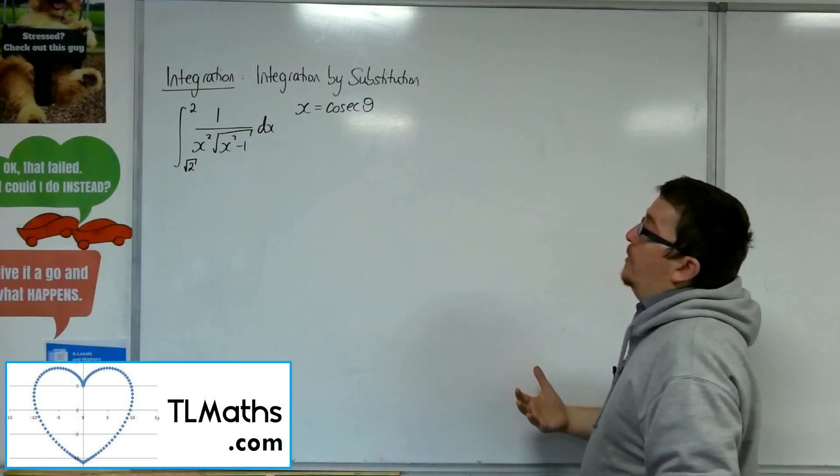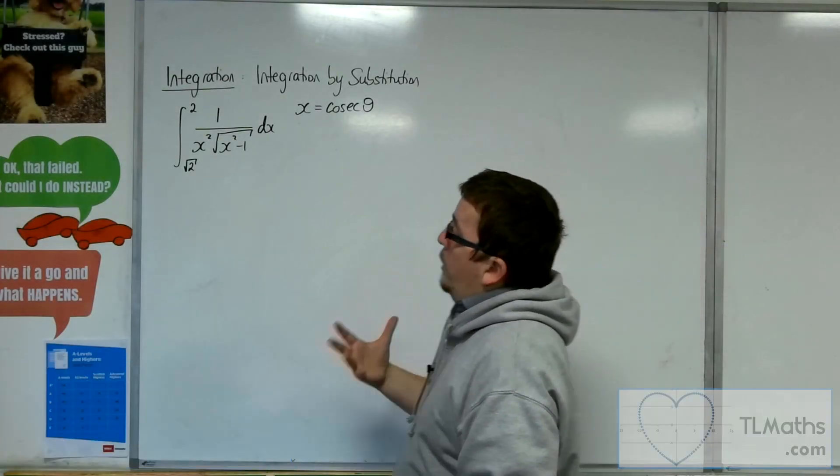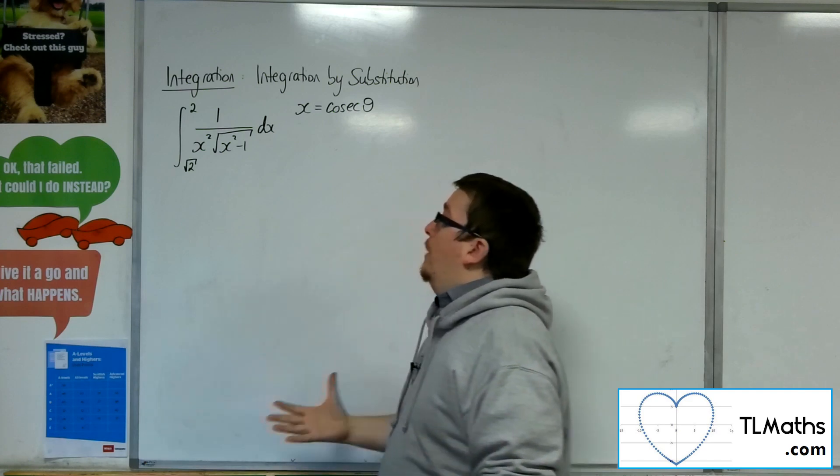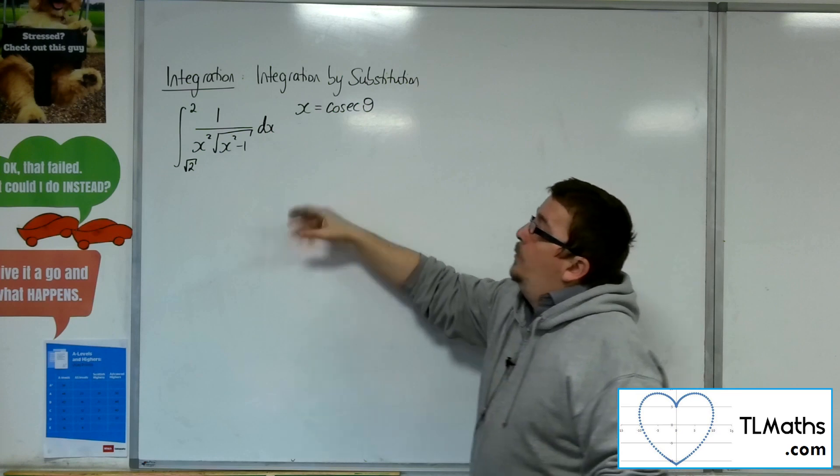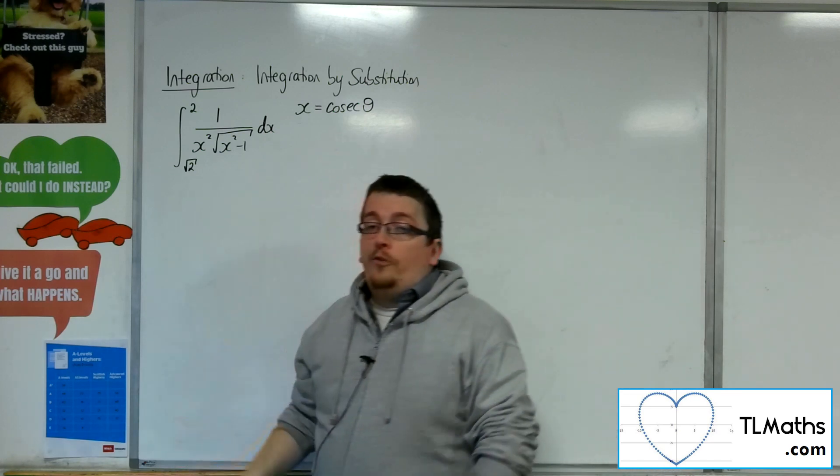In this problem I'm going to work through finding the integral of 1 over x squared times the square root of x squared minus 1 dx evaluated between root 2 and 2 with the substitution of x equals cosec theta.